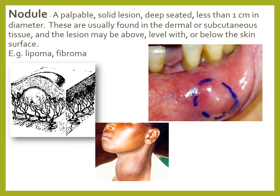A nodule is a palpable solid lesion, deep-seated and less than 1 cm in diameter. These are usually found in the dermal or subcutaneous tissue, and the lesion may be above, level with, or below the skin surface. An example is a lipoma or fibroma. In the oral cavity, a nodule could be within the mucosal tissue — such as a lipoma or mucocele within the labial mucosa.